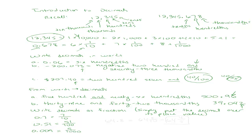Here's a trickier one: sixty-four point eight — write that as a fraction. That would be sixty-four and eight over ten. Then we reduce eight over ten, and we get four-fifths. So the final answer is sixty-four and four-fifths.